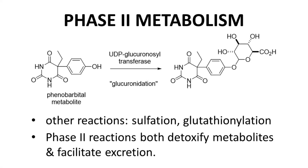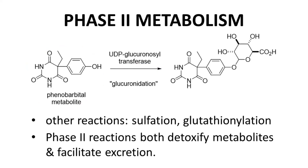Phase II reactions are called conjugations because they add a group to a drug or metabolite. On the screen is a very common type of Phase II conjugation. The reaction starts with our Phase I metabolite of phenobarbital. A UDP glucuronacyltransferase, or UGT, another family of enzymes, adds a glucuronic acid group to the OH group. This reaction is called a glucuronidation. The metabolite, a glucuronide, is extremely polar and is readily cleared by the kidneys.